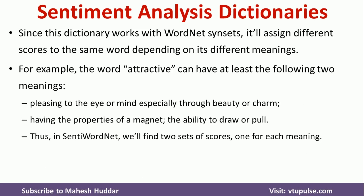For example, the word 'attractive' may have more than two meanings. The first meaning is 'pleasing to the eye or mind, especially through beauty or charm,' which carries a positive sentiment. A second meaning is 'having the property of a magnet or the ability to draw or pull,' which does not carry a strong sentiment — it is more neutral.